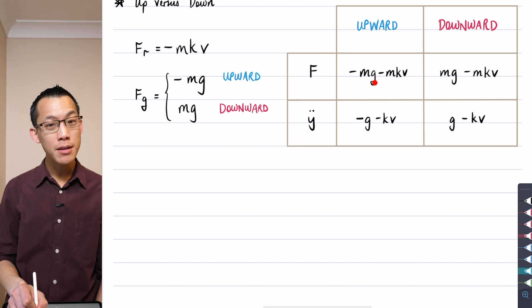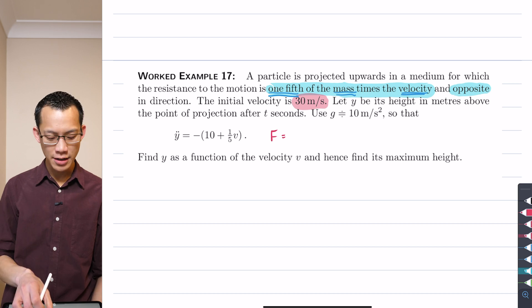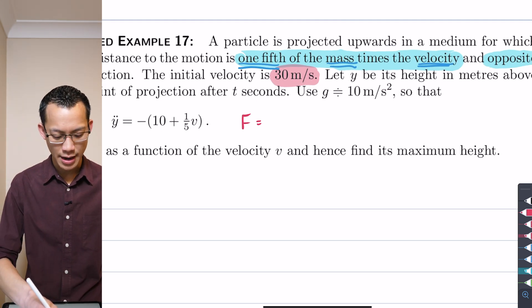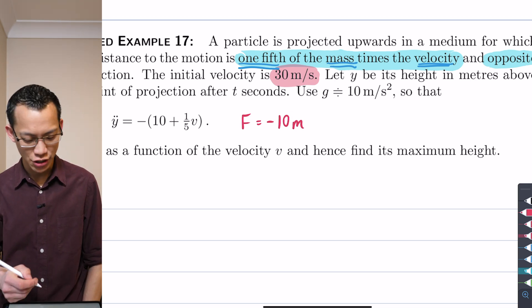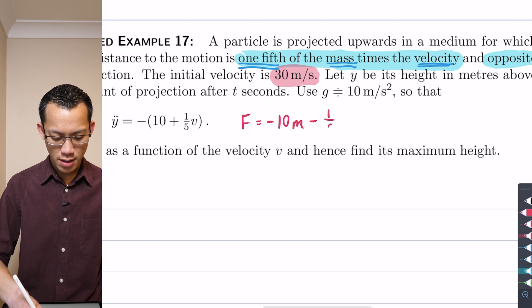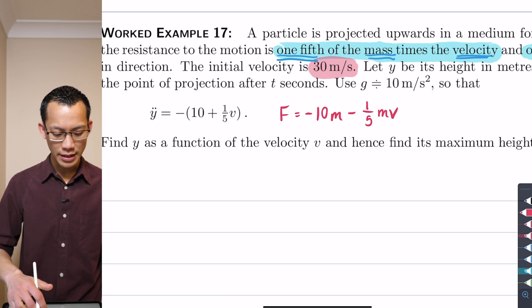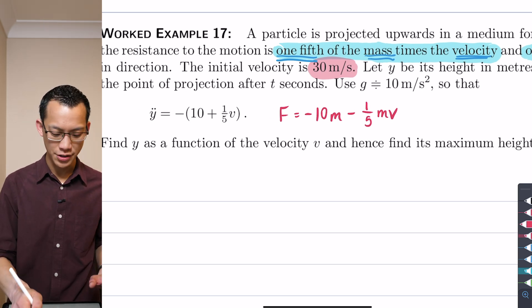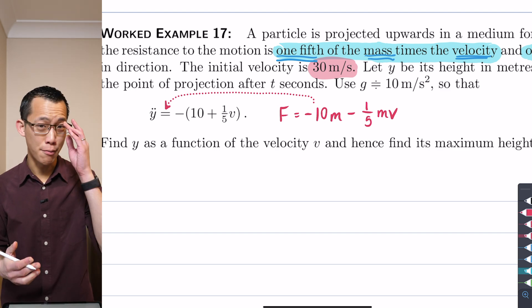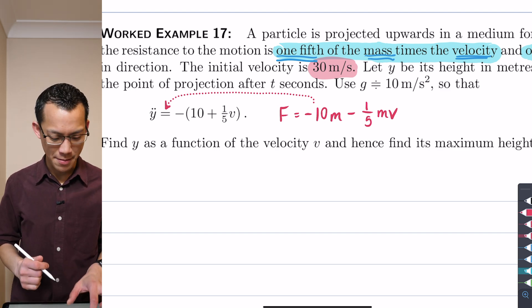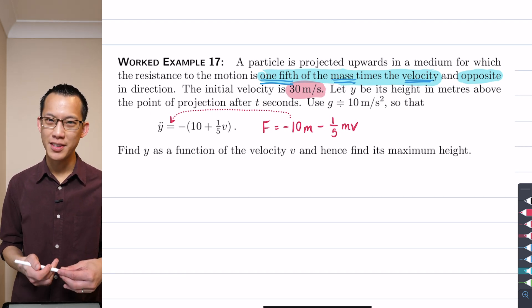So we've got g being set as 10 and the mass is not defined, but we don't need the mass because if I say minus 10m, there's the minus mg, and then minus a fifth, there's the k times mv. You can see all I need to do to get from this force equation to this acceleration equation is I'm dividing through by m according to f equals ma. Alright, so we've set ourselves up and they've given us this equation we can work with it.